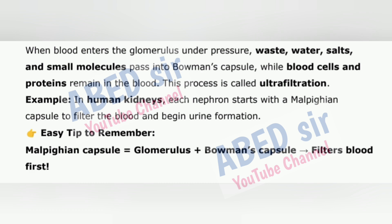Example: in human kidneys, each nephron starts with a Malpighian capsule to filter the blood and begin urine formation. Easy tip: Malpighian capsule = Glomerulus + Bowman's capsule — filters blood first.